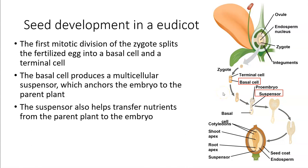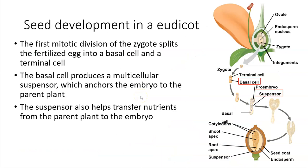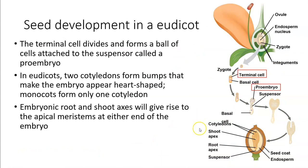The suspensor also helps transfer nutrients from the parent plant to the embryo. At this early stage, the zygote and embryo can get some nutrition from the endosperm, but that might not be enough — so it needs to get nutrition from the mother plant itself. The terminal cell is going to divide and form a ball of cells attached to the suspensor called a proembryo — meaning 'before embryo' — which is going to become the embryo.